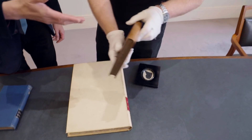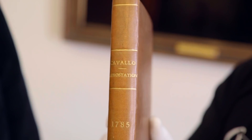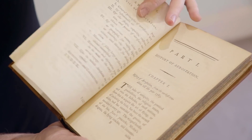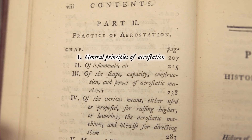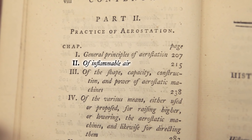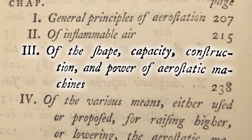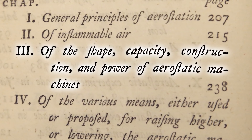So what have we got here? I think we should have a look at Cavallo's book on this phenomenon: the history and practice of aerostation. Why is it called aerostation? Well, they didn't have a word for it so they were making up their own. So that means hot air ballooning basically. Let's have a look at the contents. General principles of aerostation of inflammable air — inflammable air is obviously hydrogen. They're using hydrogen balloons as well as hot air balloons. On the shape, capacity, construction and power of aerostatic machines.